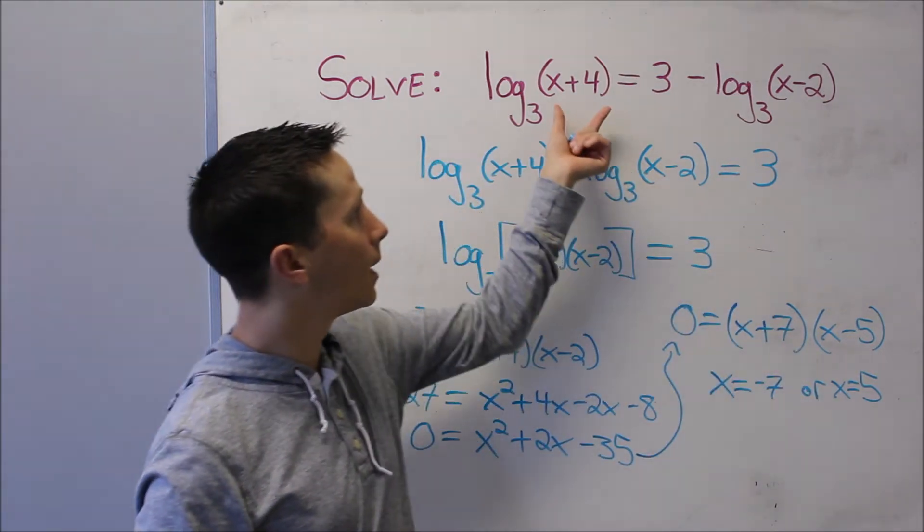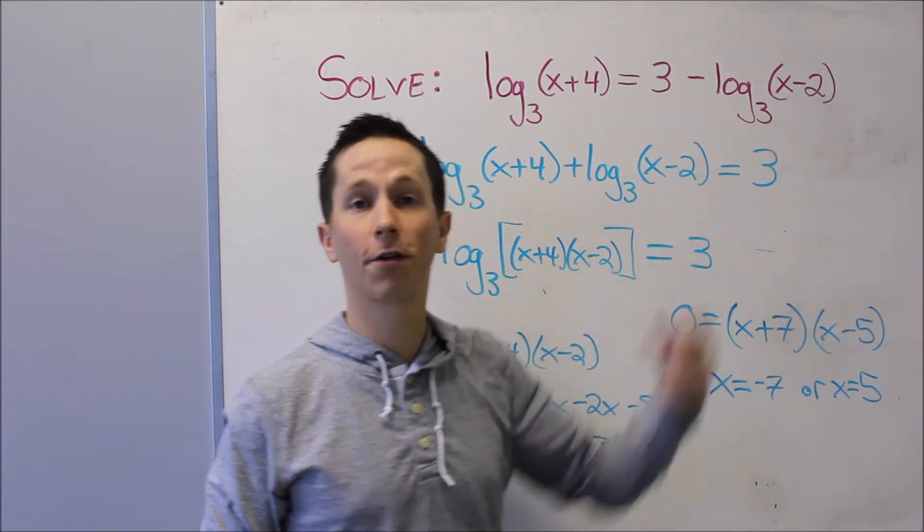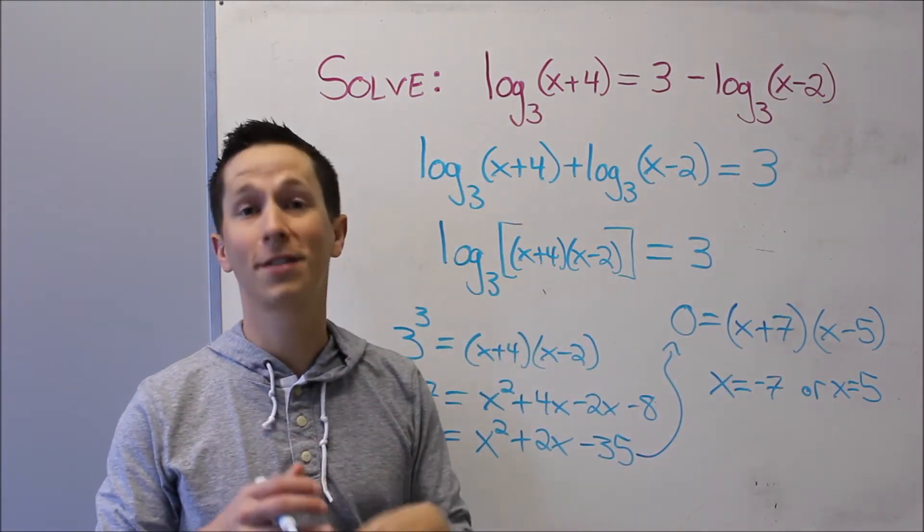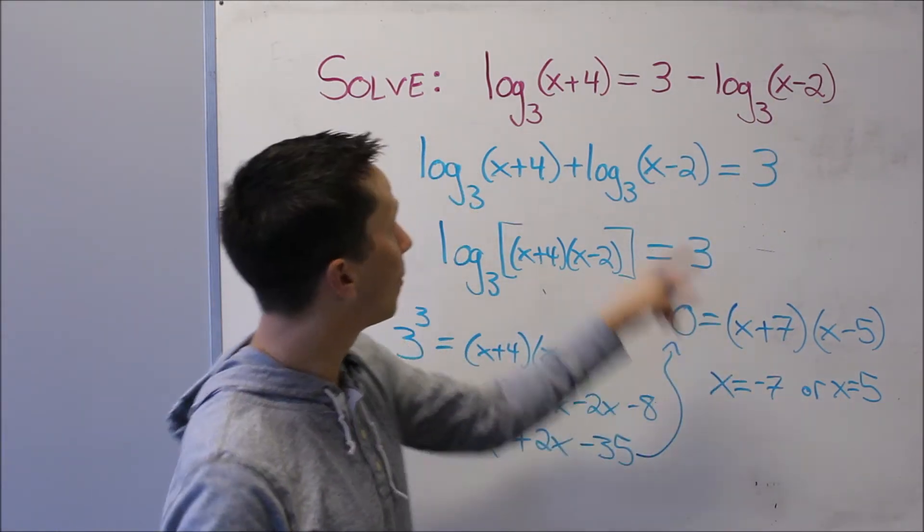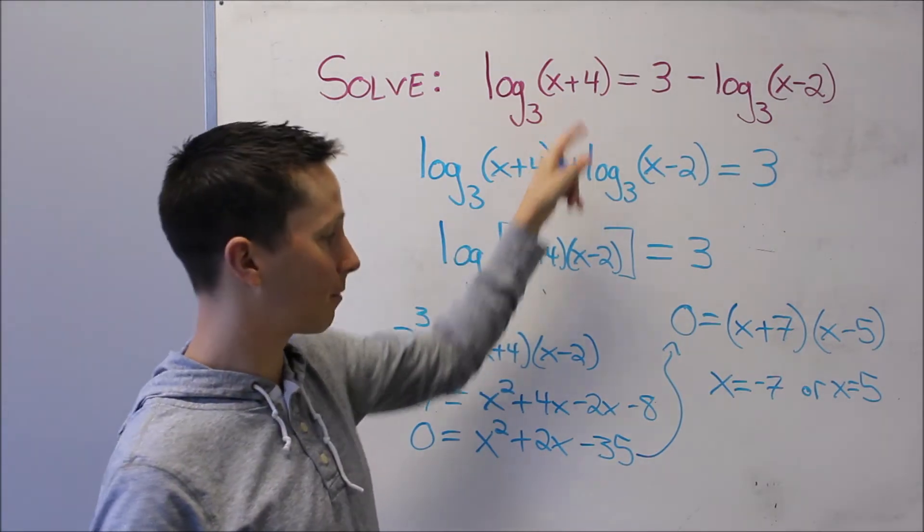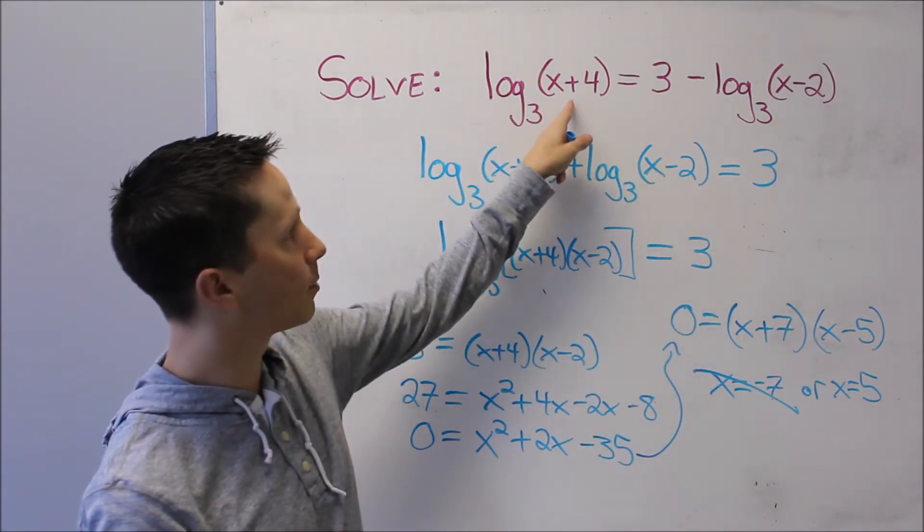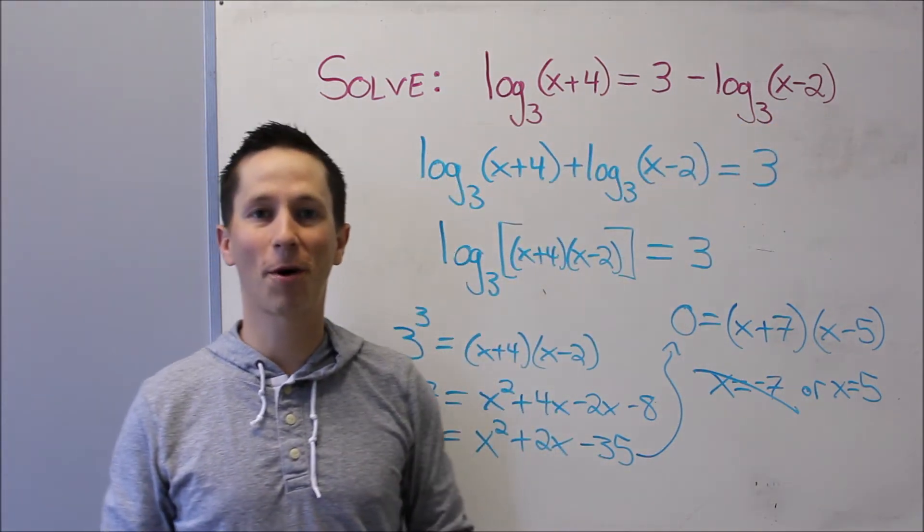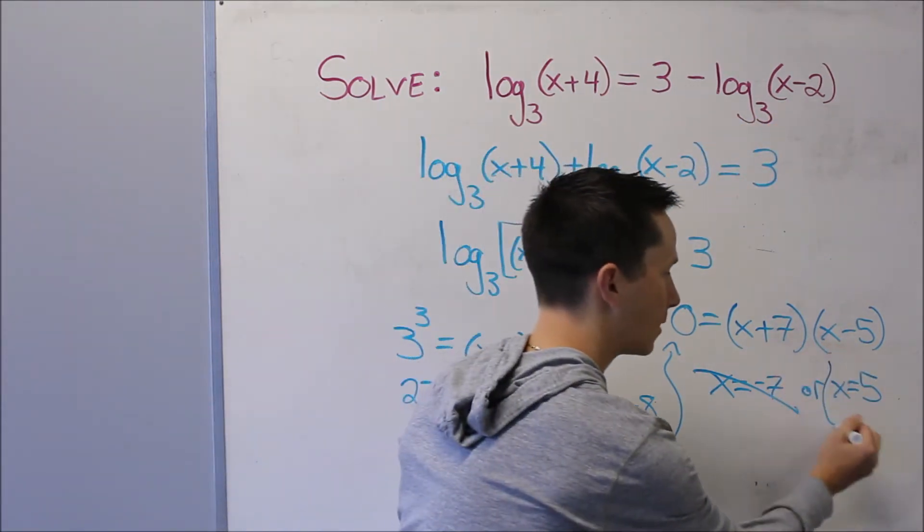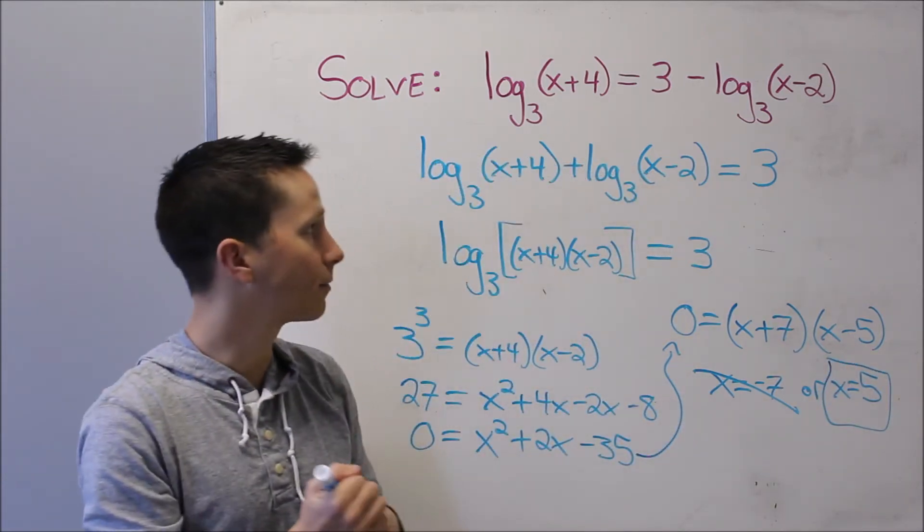So if we plug either of these in and the insides of the logarithm become negative or 0, that's no good. If I plug in negative 7, this is going to be negative 3, so right away this is no good. 5, does that work? 5 plus 4 is 9, 5 minus 2 is 3, those are both positive, we're good to go. So our answer is x equals 5.